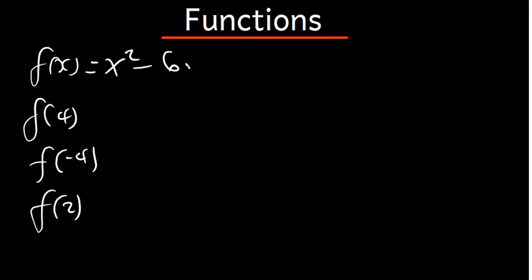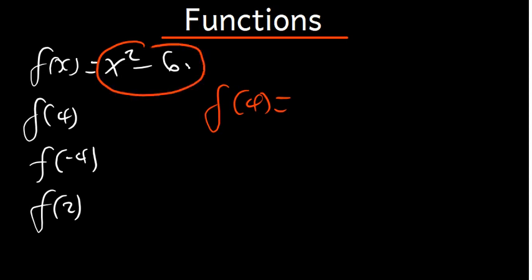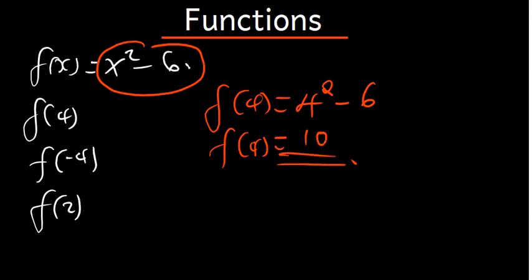So f of 4 is going to be equal to: in this function, wherever there is x, I replace it with 4. So it's going to be 4 squared minus 6. 4 squared is 16, and 16 minus 6 gives us 10. So the answer for part 1 is 10.